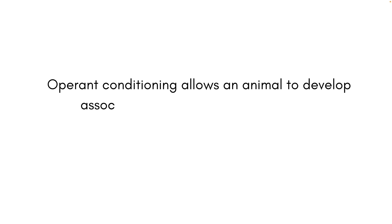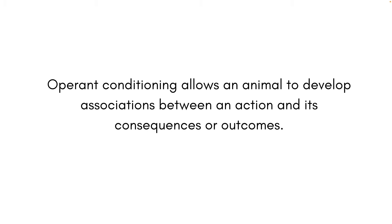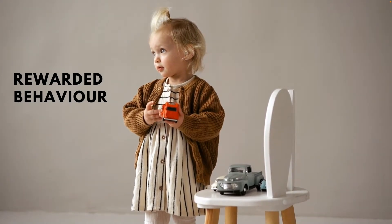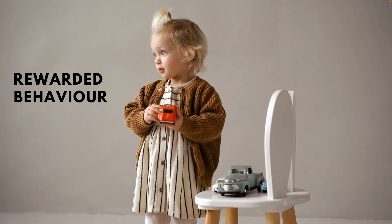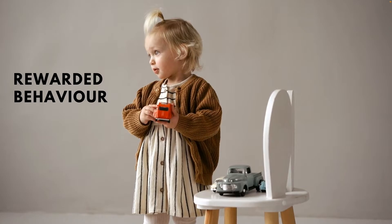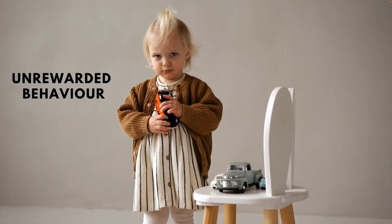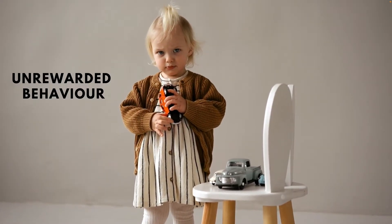Operant conditioning can be defined as the process which allows an animal to develop associations between their actions and the consequences or outcomes of those actions. Developing this association is essential because it allows one to learn the behaviors they can pursue, such as behaviors that have been rewarded, or the behaviors they need to attenuate, such as those that have been unrewarded or subject to punishment.